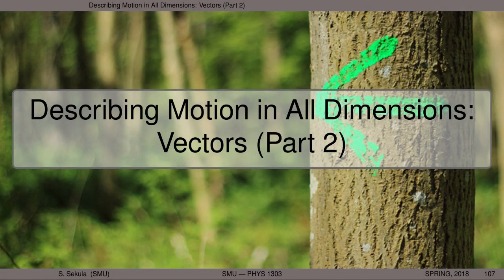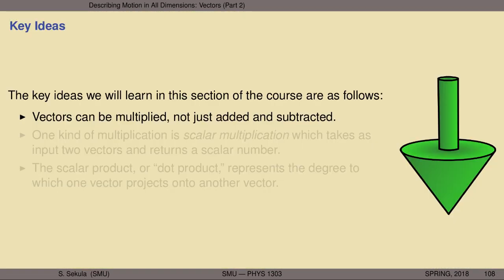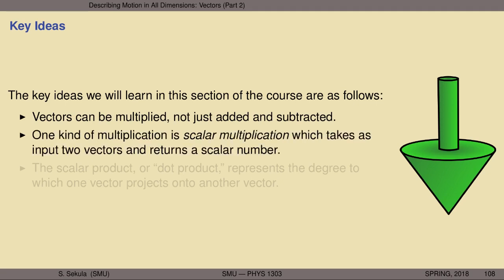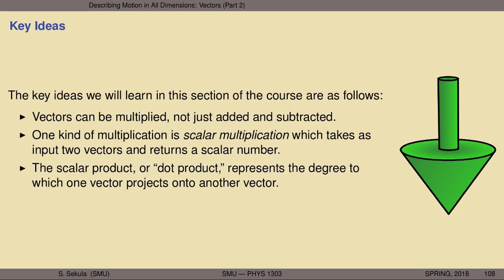In this second part of the discussion of vectors, we want to continue exploring our description of motion in all dimensions. The key ideas we're going to learn in this section are as follows. Vectors can be added and subtracted, but it's not the only arithmetic operation defined for vectors. We're going to explore scalar multiplication, which takes two vectors as input but returns a scalar number. The scalar product, or dot product, represents the degree to which one vector projects onto another and multiplies that projection by the length of the remaining vector.